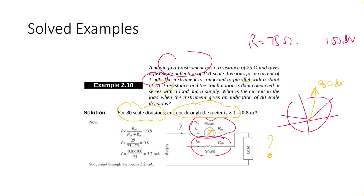A 25 ohm resistance is connected in parallel with the 75 ohm galvanometer. The current through the galvanometer branch at 80 divisions is 0.8 milliampere. We use the current divider rule to find the total current entering the parallel combination.